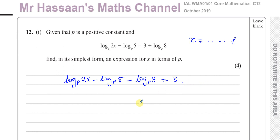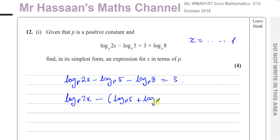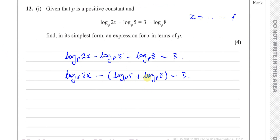Now, using the division law, this is a subtraction and this is another subtraction. You could write it as log base P of 2x minus the quantity log base P of 5 plus log base P of 8. I can combine those two together — if the separate logs are added, you can multiply the terms inside and write it as one single logarithm.